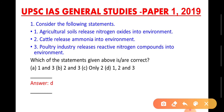Consider the following statements. Statement one: Agricultural soil releases nitrogen oxides into the environment. Statement two: Cattle releases ammonia into the environment. Statement three: The poultry industry releases reactive nitrogen compounds into the environment. Which of the statements given above is or are correct? Option: one, two, three — all are correct.